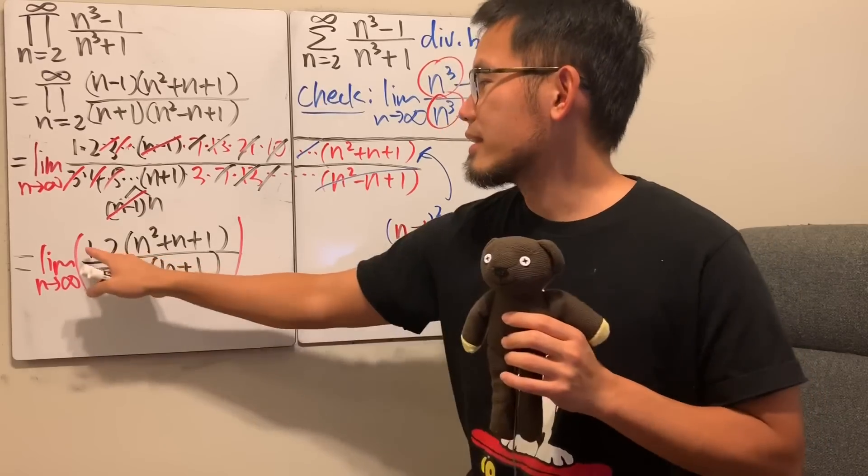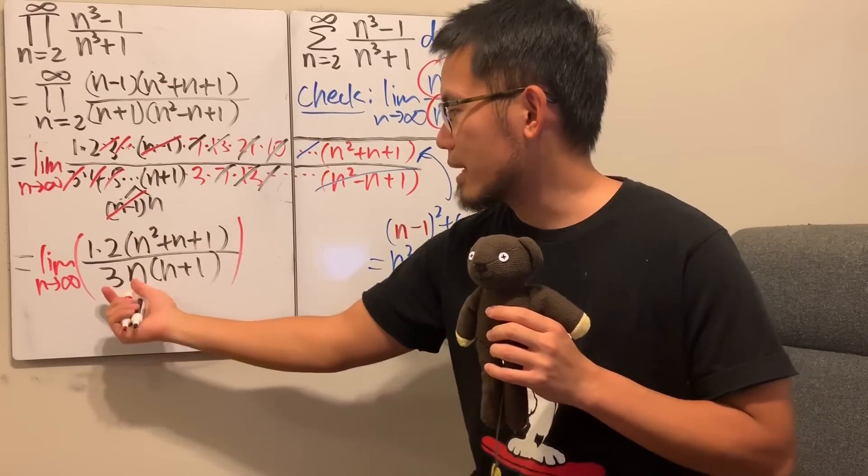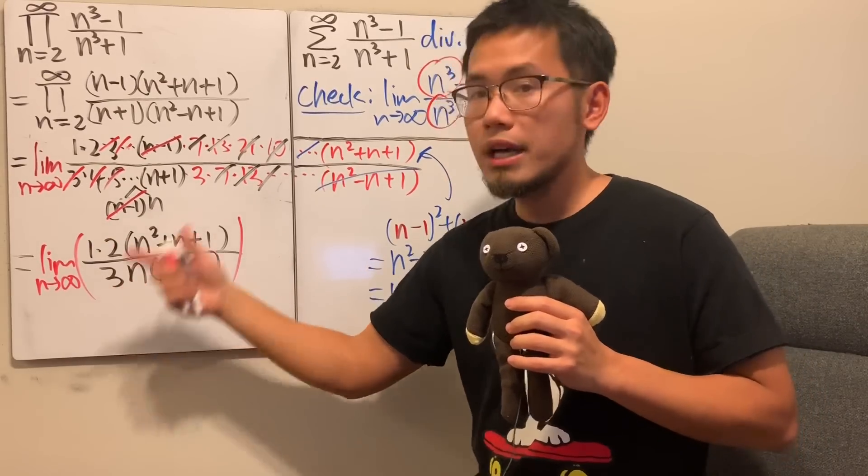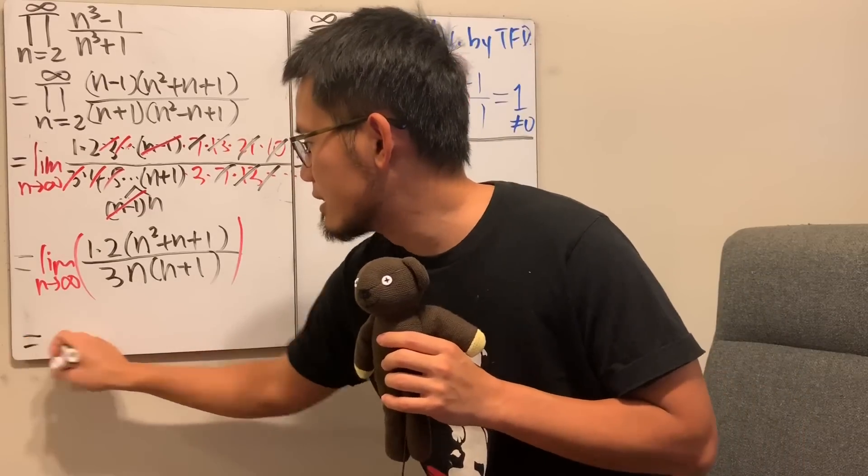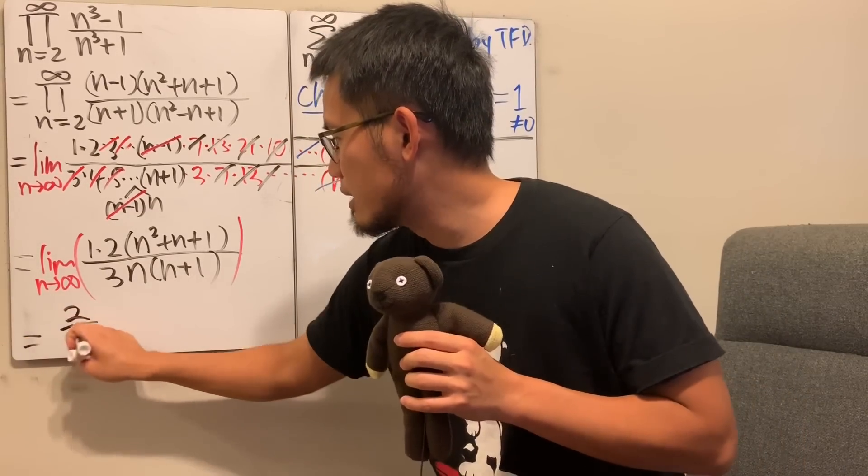Well, well, on the top, just 2 times n square, and on the bottom, it's 3 times n square. So, in the end, if you just pay attention to the dominating parts, we will have the answer being equal to 2 thirds.